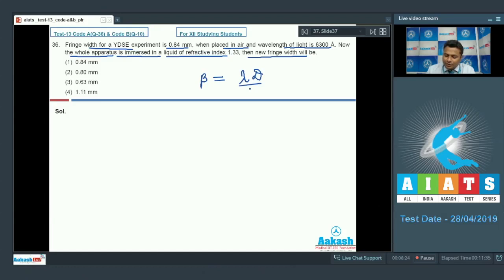Capital D upon small d, where lambda is wavelength of light, capital D is the gap between screen and slit, and small d is separation between slits. Now if the medium will be changed, then definitely wavelength will also be changed. The new fringe width beta dash will be lambda dash D upon d, where lambda dash will be lambda by mu.